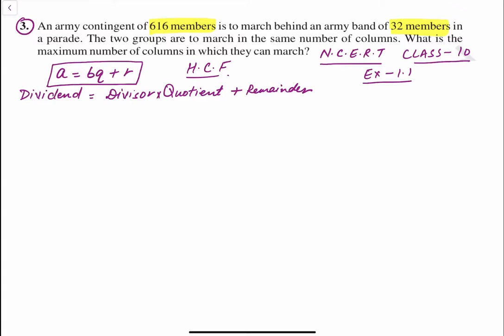The two groups are to march in the same number of columns. What is the maximum number of columns in which they can march? We have to find maximum number of columns. So we have two numbers, 616 and 32.